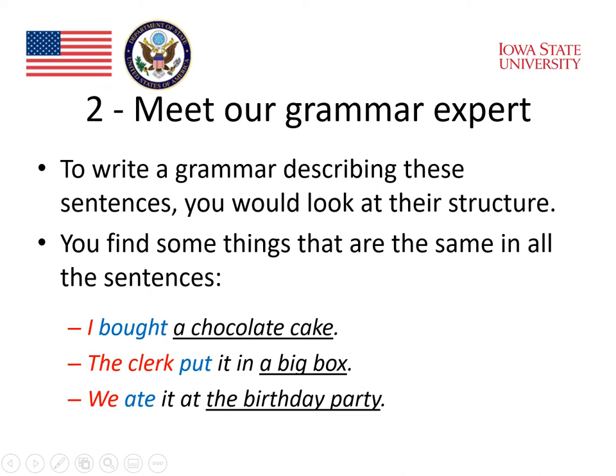'I' refers to the speaker in the first sentence. 'Clerk' refers to the person in the store. 'We' refers to me and somebody else in the third. The second thing found in common is that each one has a verb — a word that says we did something: 'bought,' 'put,' and 'ate.' The verbs are shown in blue.